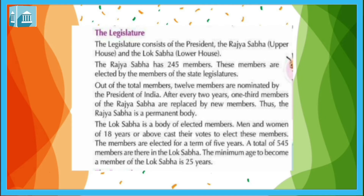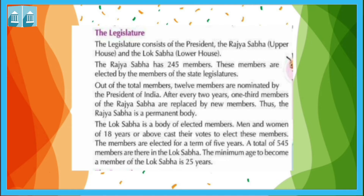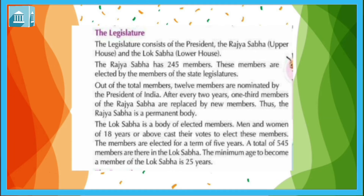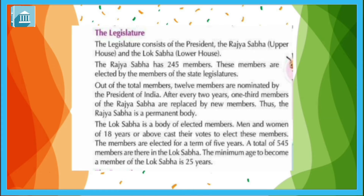The President is the head of the country and is elected for a term of 5 years. The President and Vice President are elected by the Electoral College — a group of people who come together specifically to elect the President or the Vice President.